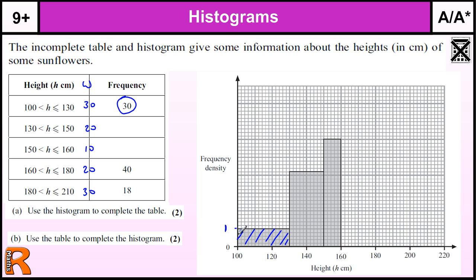And that's 1, 2, 3, 4, 5 squares. So every 5 squares is 1. So that's going to be 2, that's going to be 3, that's going to be 4, 5, and so on, up to there. Not easy to spot where that one is. 7, 8, and the top of the graph is 9.